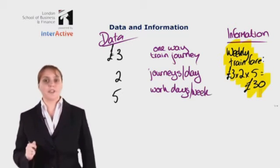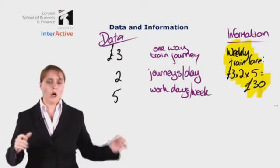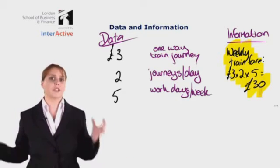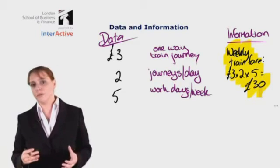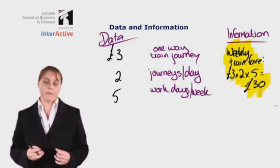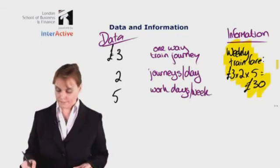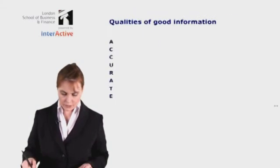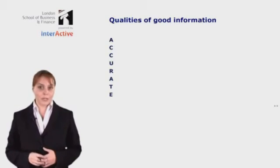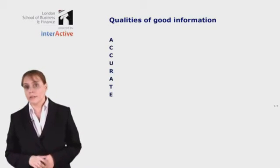The final thing we want to consider in relation to information is what makes something good information. There is a whole lot of information out there — we only need to look on the internet to see that. So which information is useful in any given situation and which is just wasting our time? Good information will have a number of characteristics, and there is an acronym to help you remember these: ACCURATE. We're going to go through each quality using a scenario.